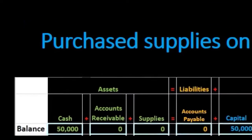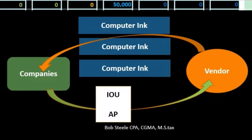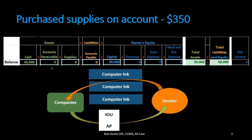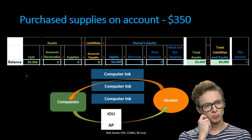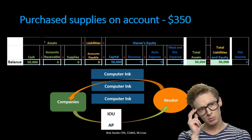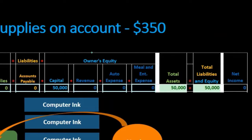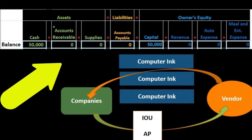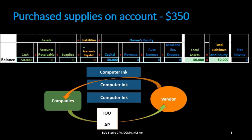We will go through a list of transactions, look at our accounting equation, start with a beginning balance, list the transactions for each event, and arrive at an ending balance. Assets include cash, accounts receivable, and supplies. Liabilities deal with accounts payable, which is where we will be focusing most of our attention.